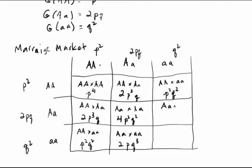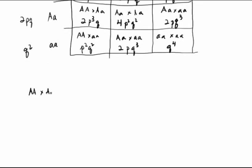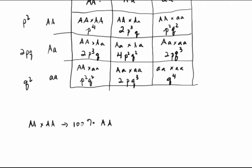The same heterozygote cross with little a little a mating occurs on the other side at a likelihood of 2pq cubed. Finally, the likelihood of both partners being little a little a — a little a little a cross with little a little a mating — occurs at a frequency of q raised to the fourth power. That's the entire range of possibilities; there aren't any other matings that are going to be taking place. If we have big A big A crossed with big A big A, then 100% of the offspring are going to be big A big A.